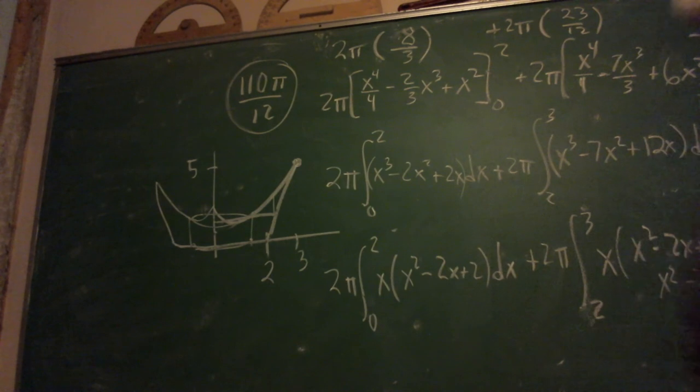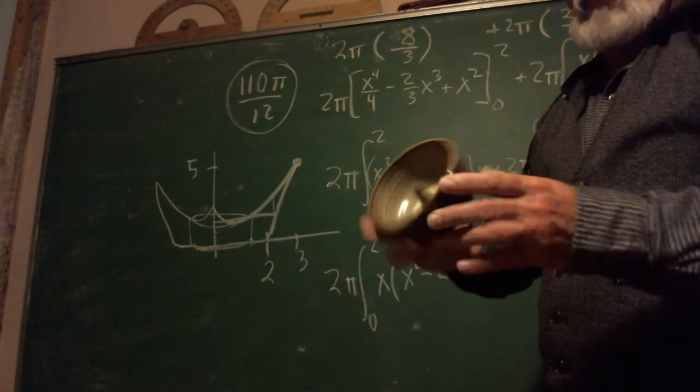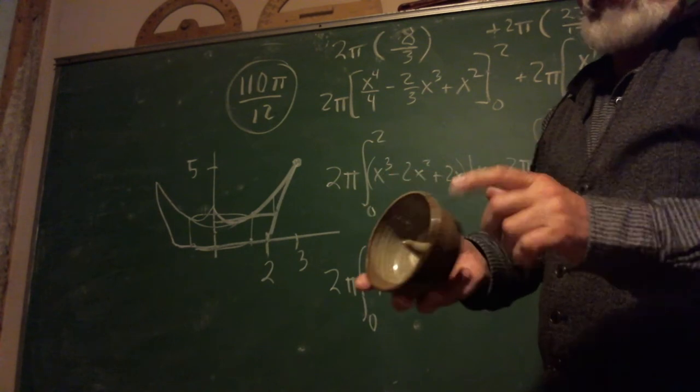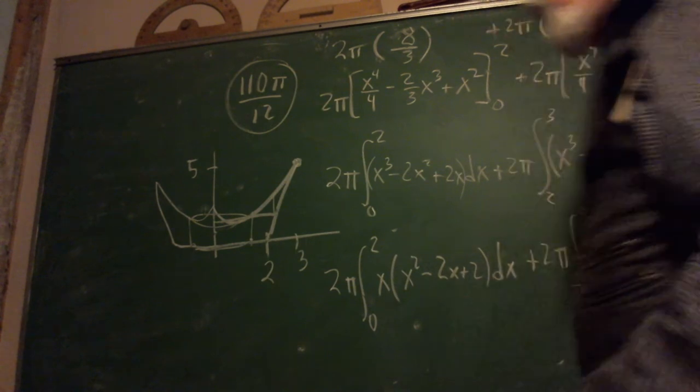And then I put in the numbers myself and calculated through. You can do it yourself if you want to, but I got out a solid 110 pi over 12. So it's not a gigantic volume, but it's not a very big thing - the sides are pretty thin. Remember, we're finding not the space inside, we're finding the volume of the material that this pot is made of.